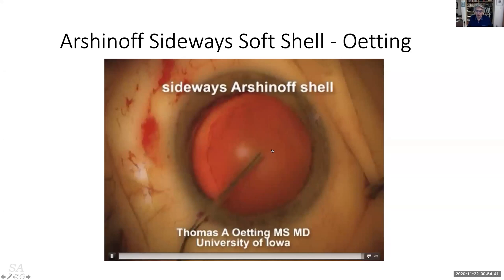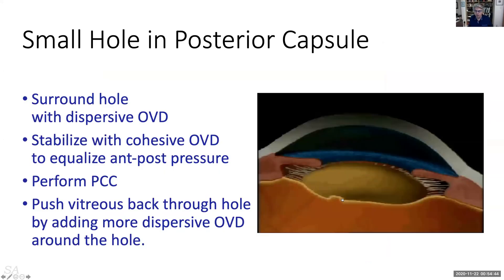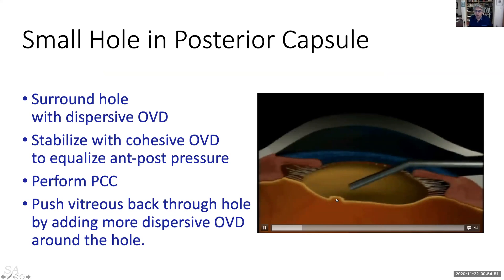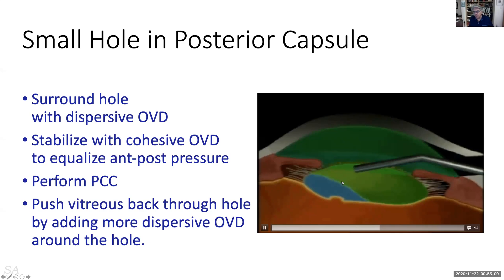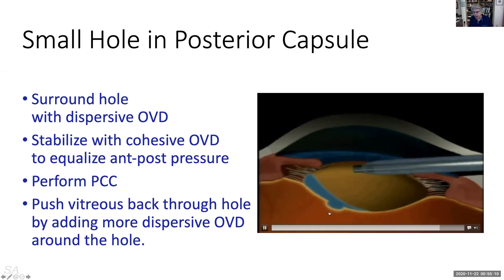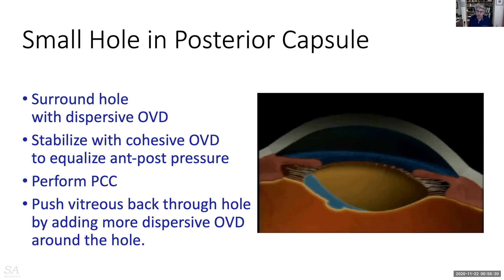When you make a hole in the posterior capsule, all holes start as small holes. If you keep the phaco in the eye and surround the hole with dispersive OVD in a circular fashion, you push the capsule back gently and push vitreous toward the center. Then viscous cohesive OVD balances the pressure in front and behind the eye. You can do the case under low flow without major problems, turning a potential disaster into a manageable situation.